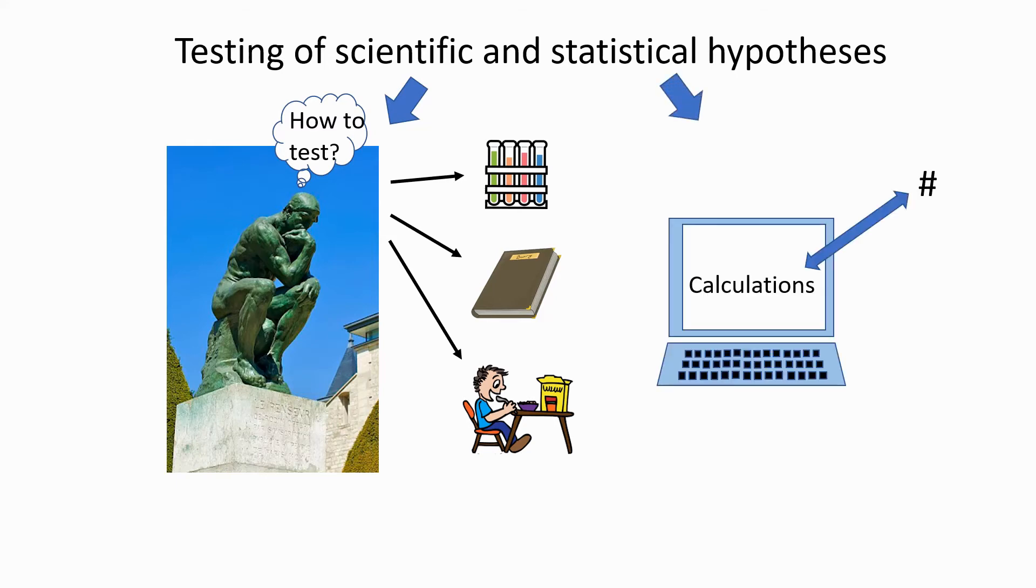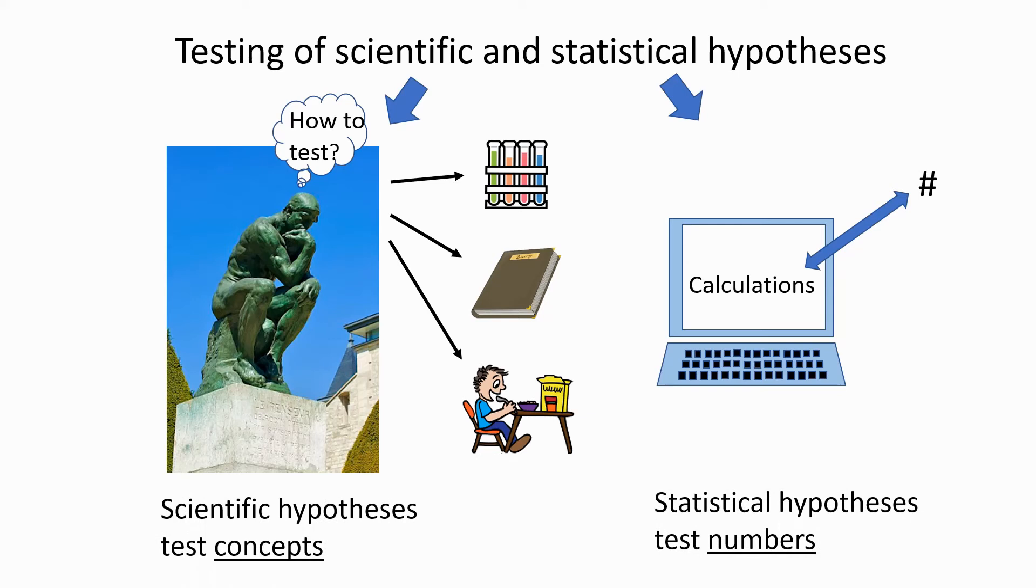Statistical hypotheses, on the other hand, ultimately are going to involve calculations. Now, there are, of course, different kinds of statistical tests that we could apply, but at the end of the day, calculations involving numbers are how we're going to test the statistical hypothesis. So the scientific hypothesis tests concepts, whereas statistical hypotheses test numbers.